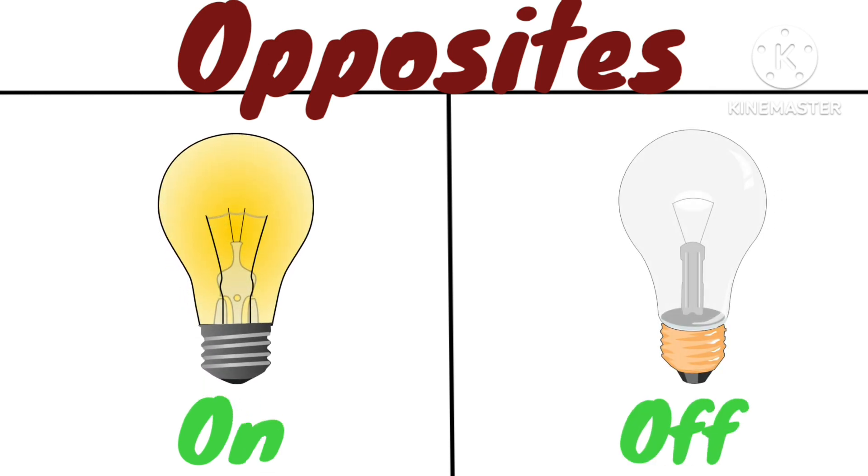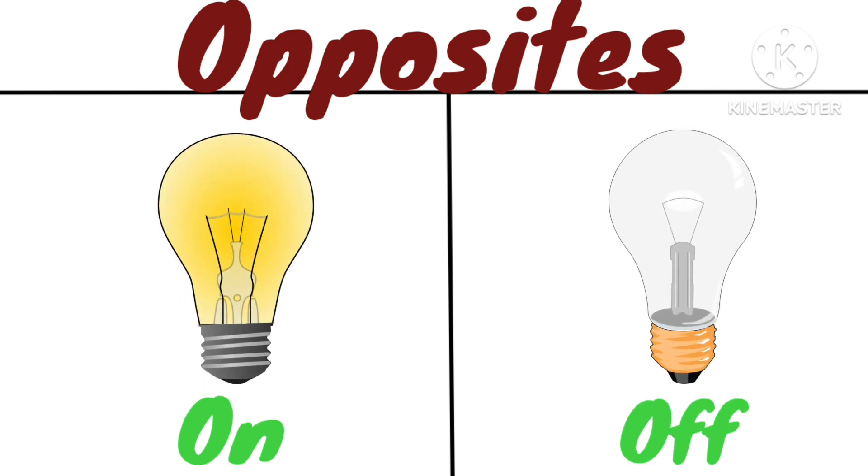Opposite of new is old — new clothes, old clothes. Opposite of on is off — switching on the lights, switching off the lights.